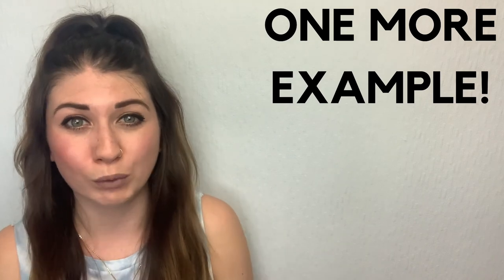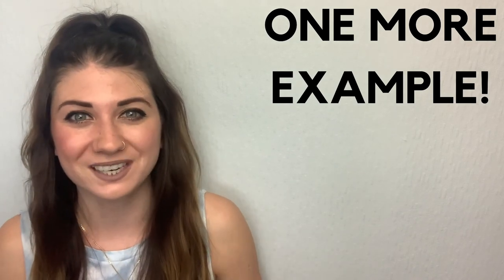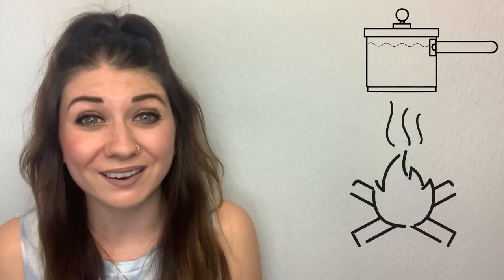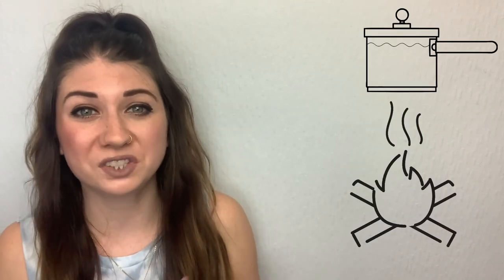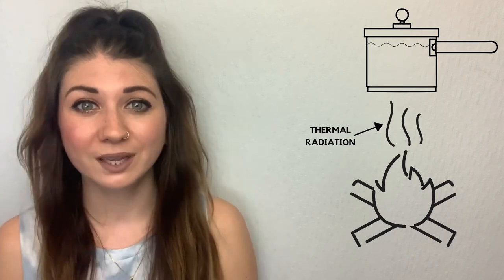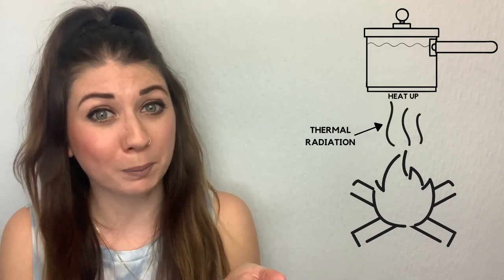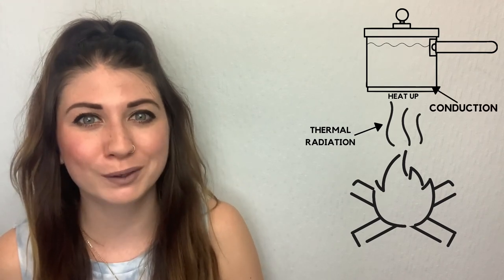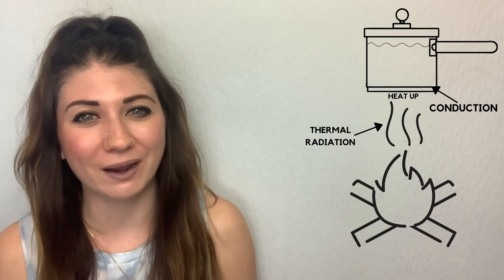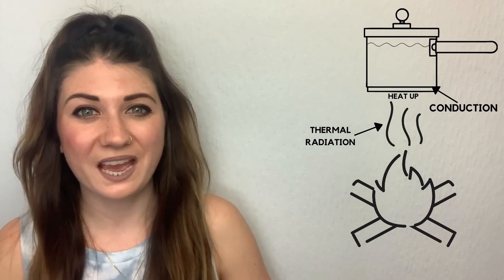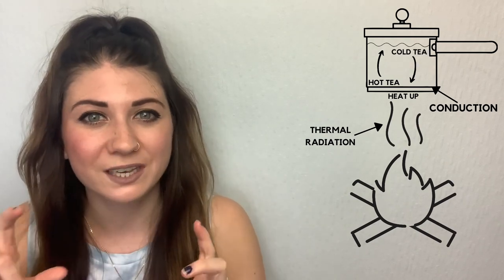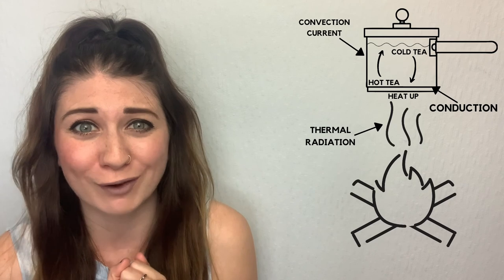Here's an example that ties all three methods of heat transfer together. You heat a pot of tea over a fire. The fire produces thermal infrared radiation, which heats up the bottom of the pot. The hot pot then transfers heat energy to the tea through conduction, because they're in direct contact. The tea at the bottom of the pan heats up and rises to the top, allowing the cold tea to drop to the bottom, creating a convection current.